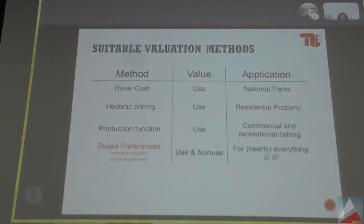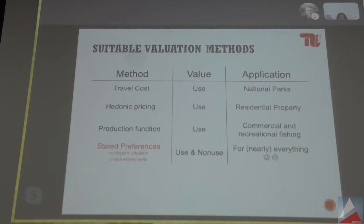The last slide in this first section links the valuation methods we have to these different types of values within the total economic value framework. On the left side there are four different methods. The first is the so-called travel cost method — people literally travel to a national park or spectacular landscape, spending money on petrol or plane tickets, and this market transaction can be used as an indicator of people's values.